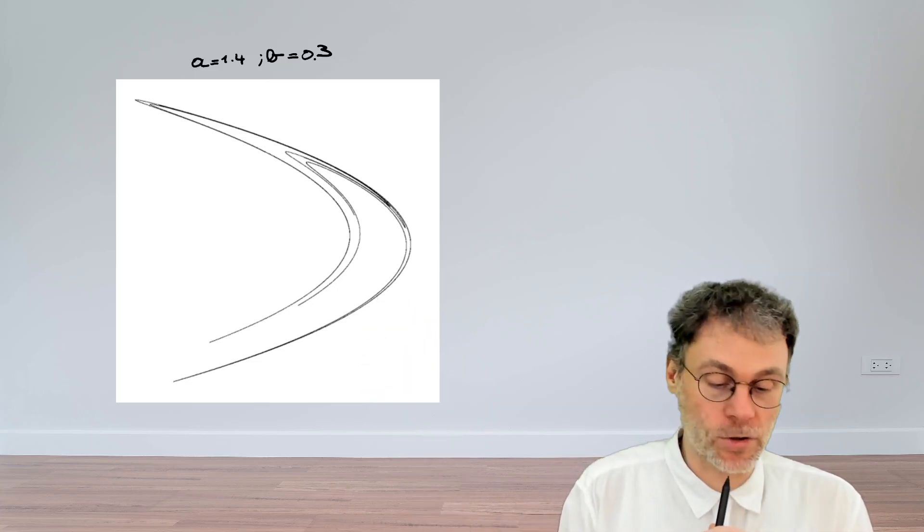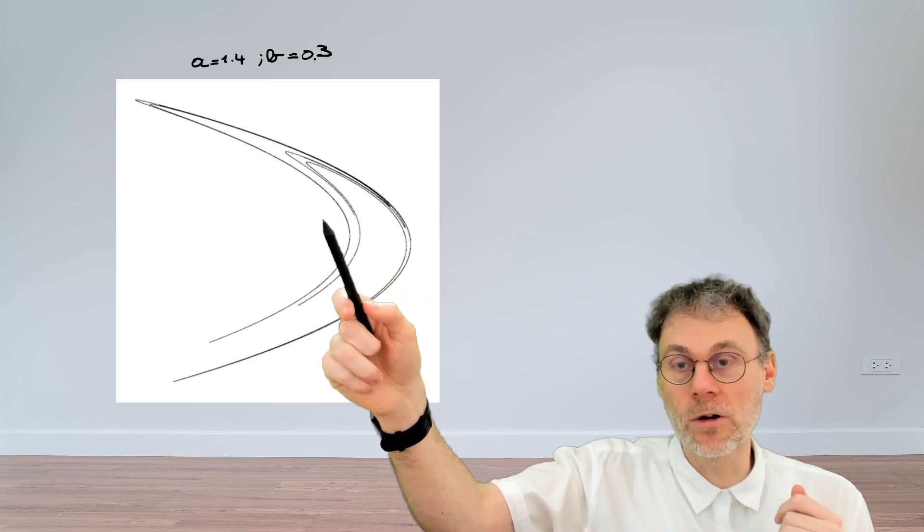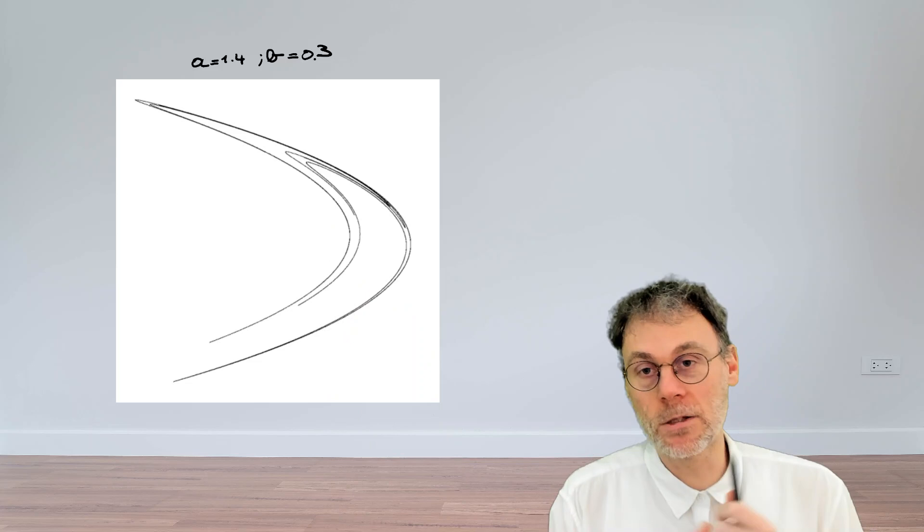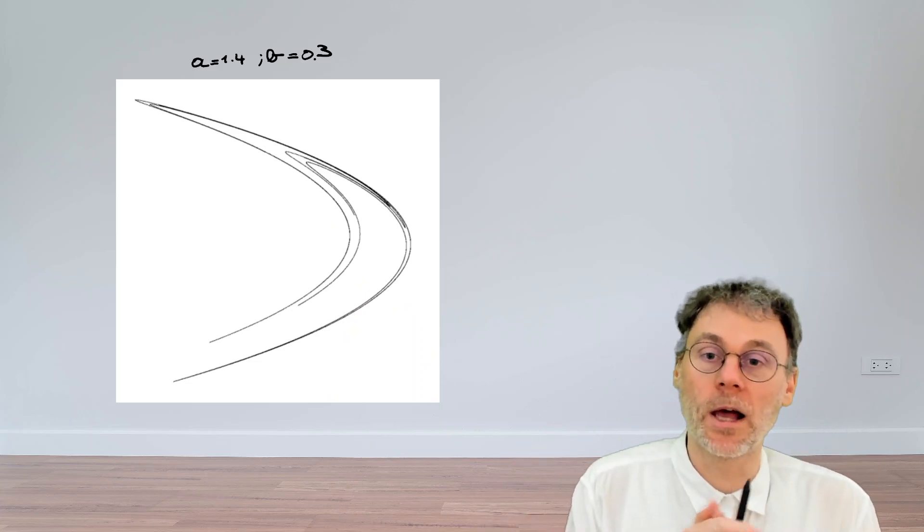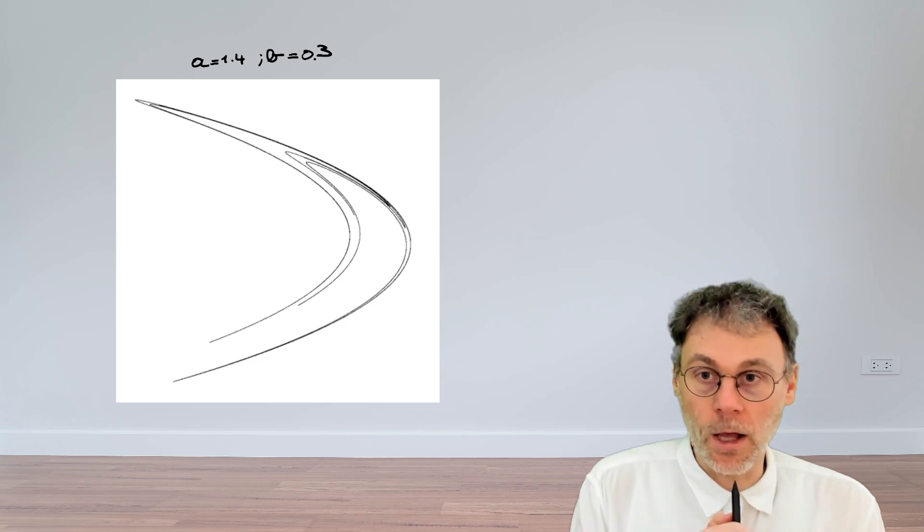Rather than ending up at a period two point, you get this very complicated chaotic structure. Again here this is a fractal, a self-similar structure. If you zoom in on a part of this structure you again get this very complicated structure with lines folding over themselves ad infinitum.